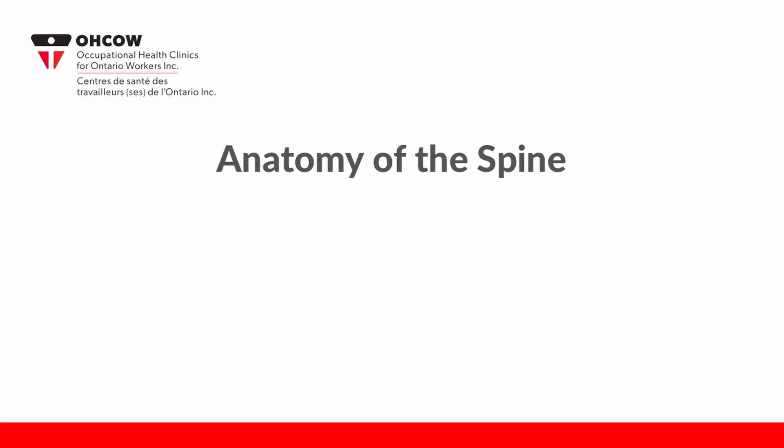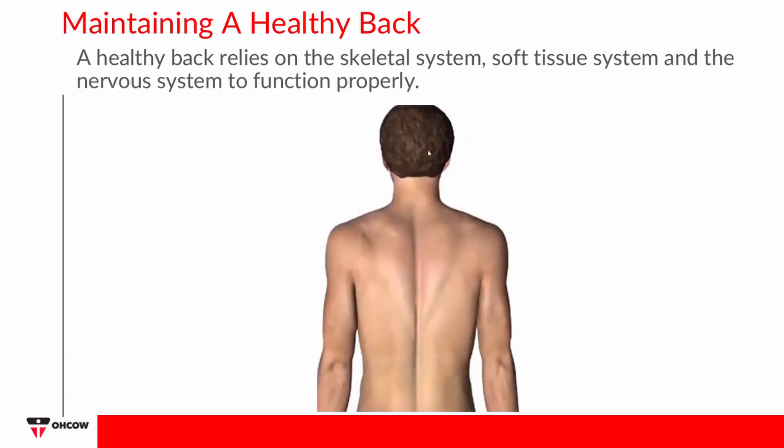Anatomy of the spine. Before you can truly understand the importance of proper back care and injury prevention, it is important to first know and understand how the back functions. This begins with knowing the anatomy of the spine and how these structures function. Maintaining a healthy back relies on the skeletal system, soft tissue system, and the nervous system to function properly.